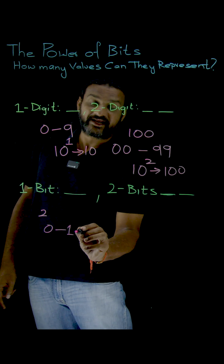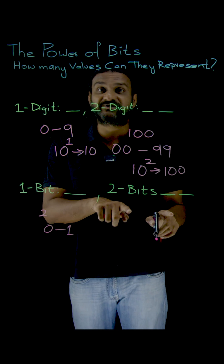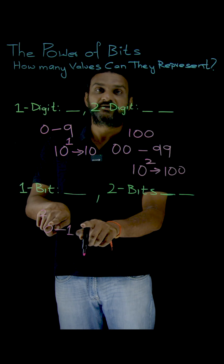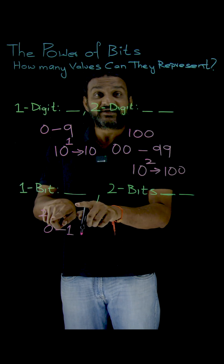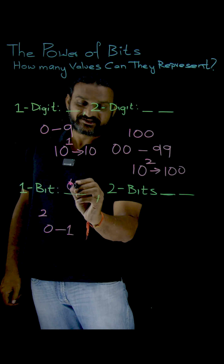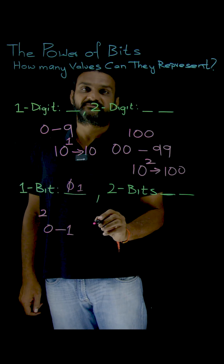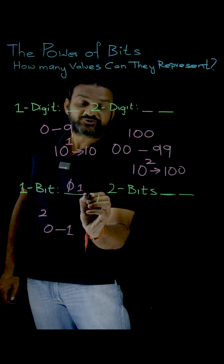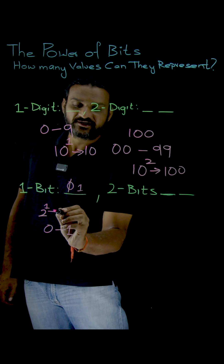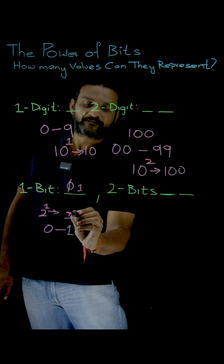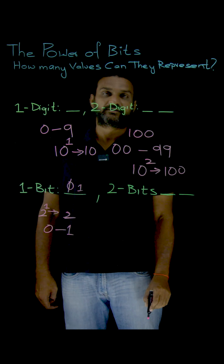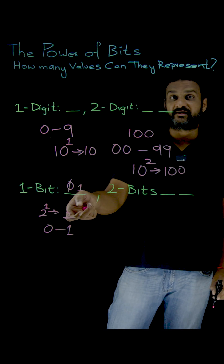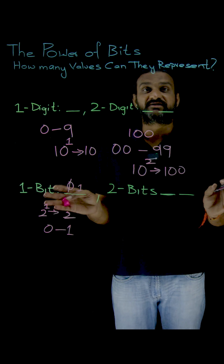So how many possibilities? Only two possibilities. The range of numbers in decimal is from 0 to 1 — two numbers total. The logic is: there are two symbols and the number of spaces is one, so two to the power of one gives us two. This logic is applicable to any number system.